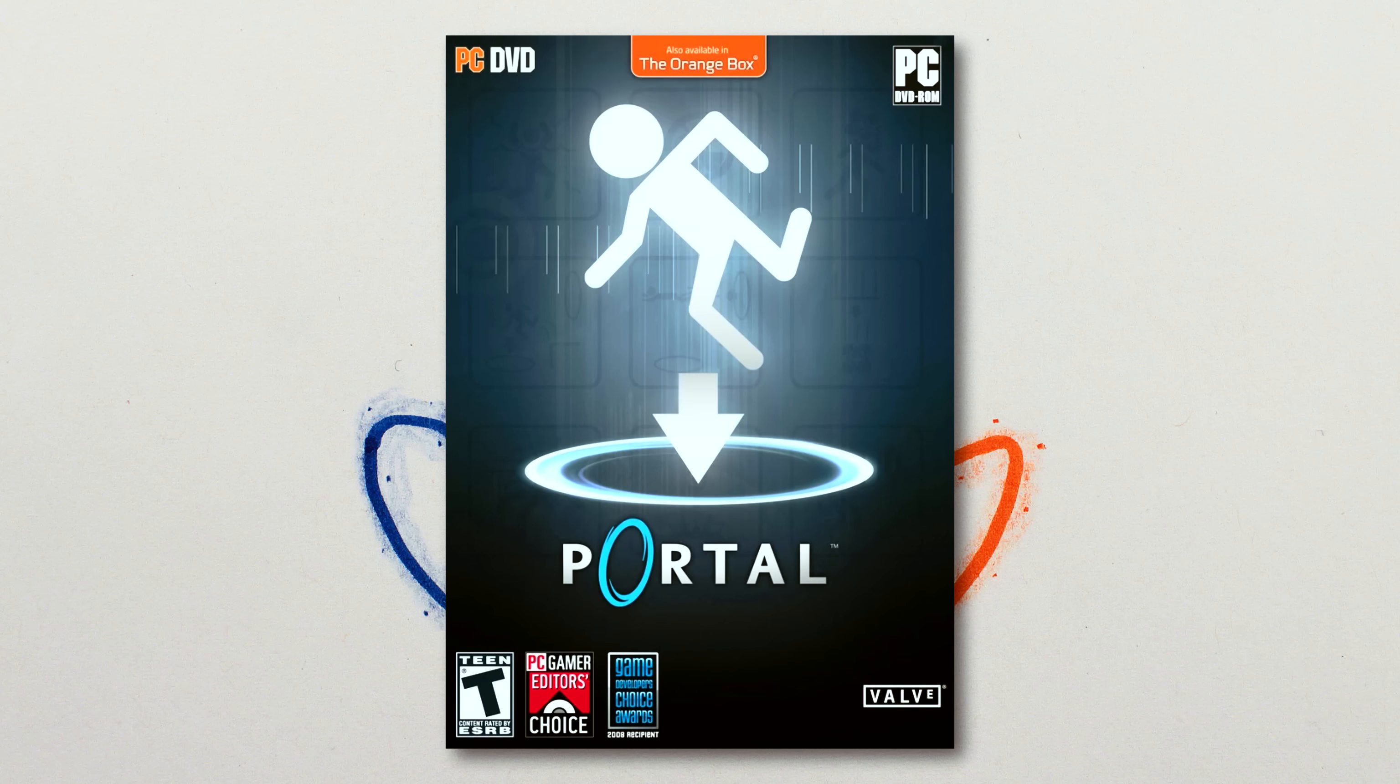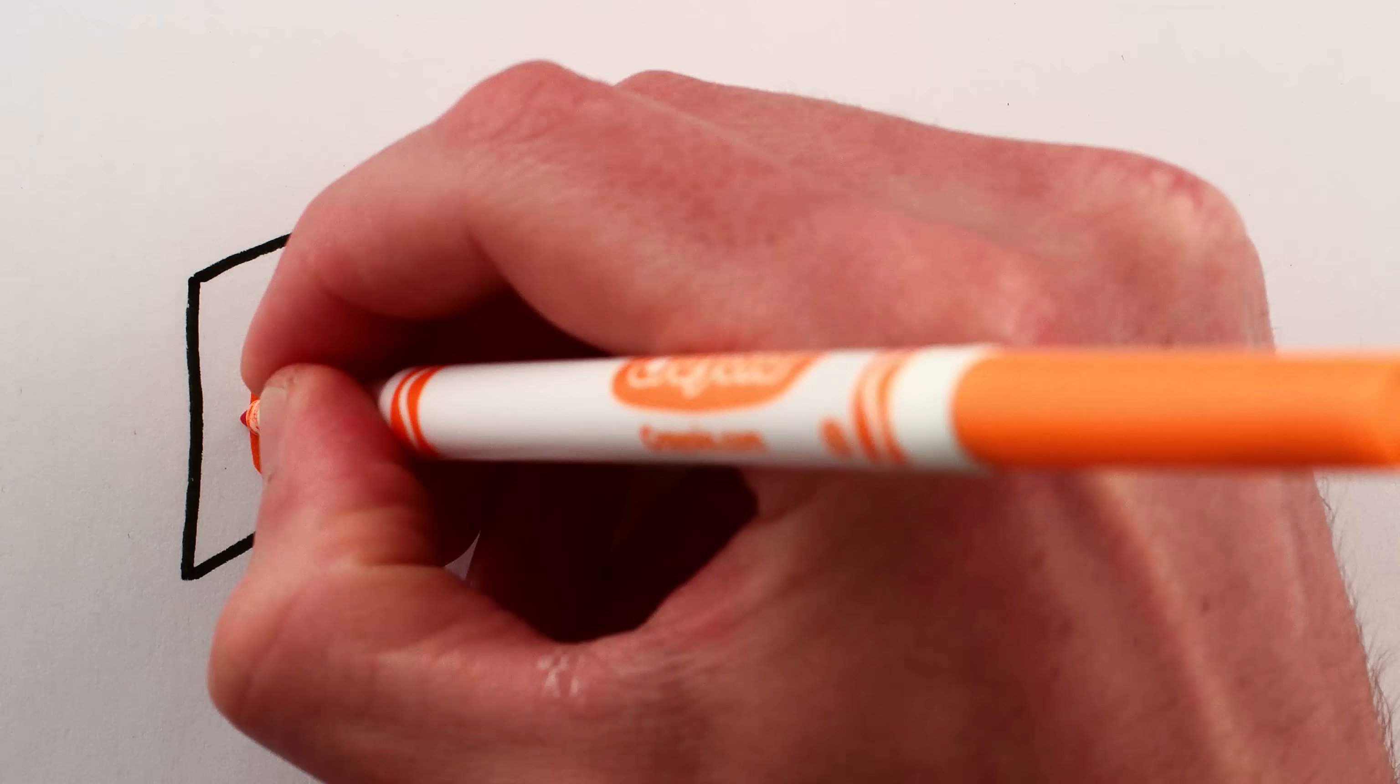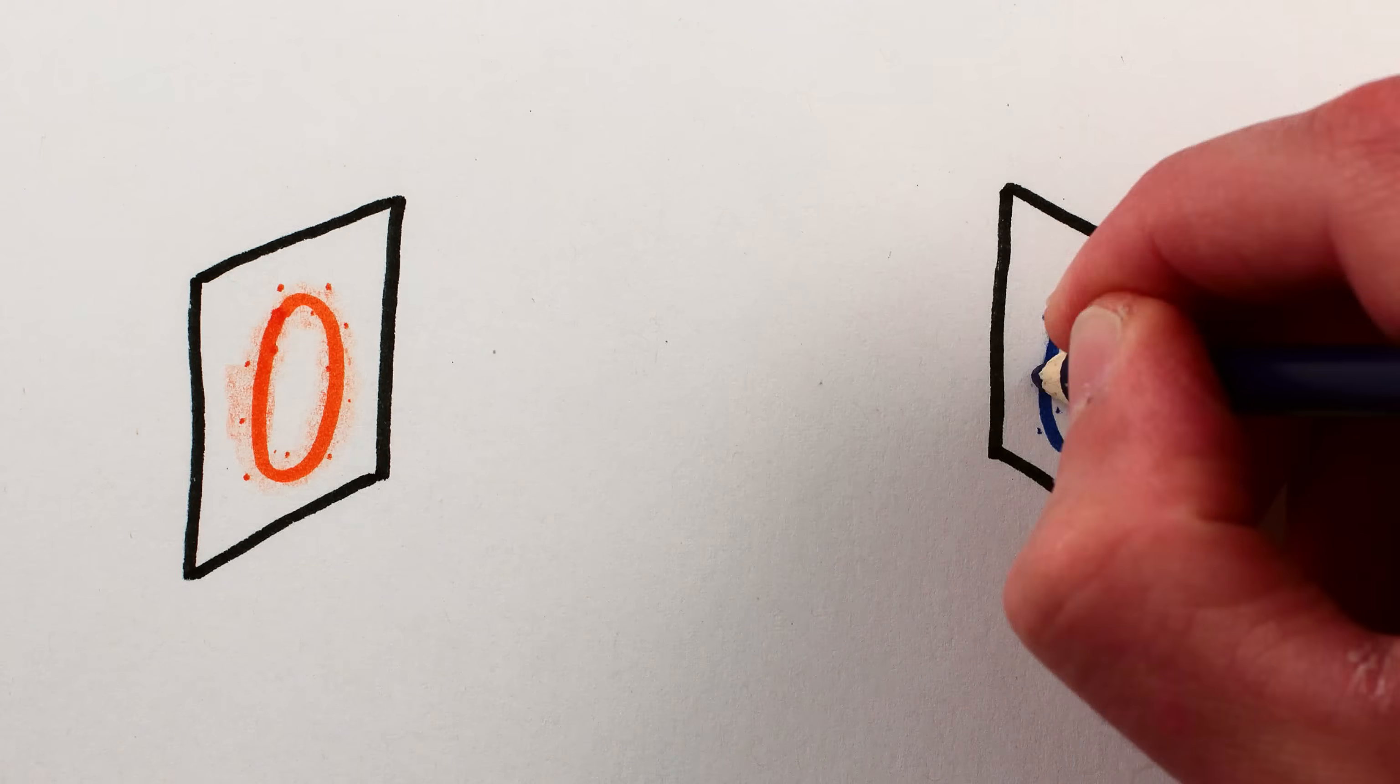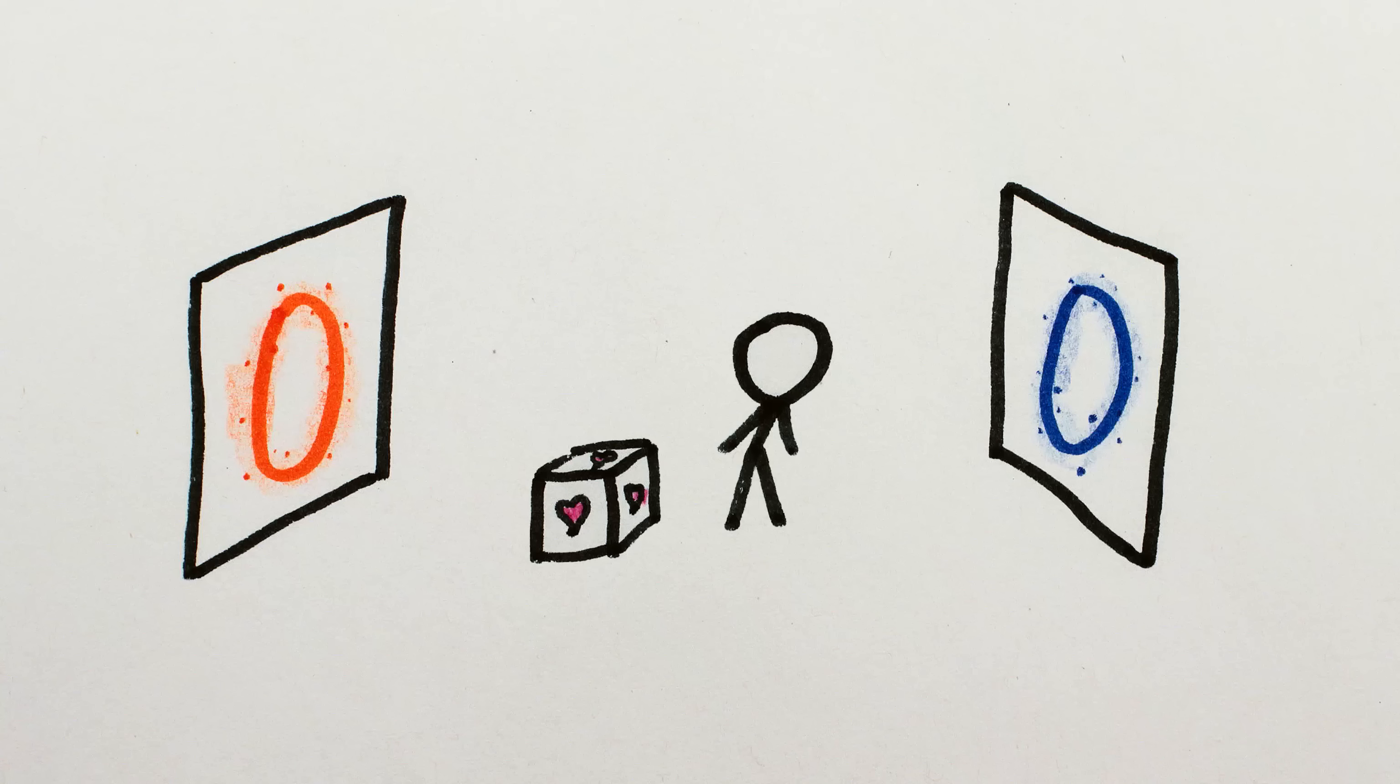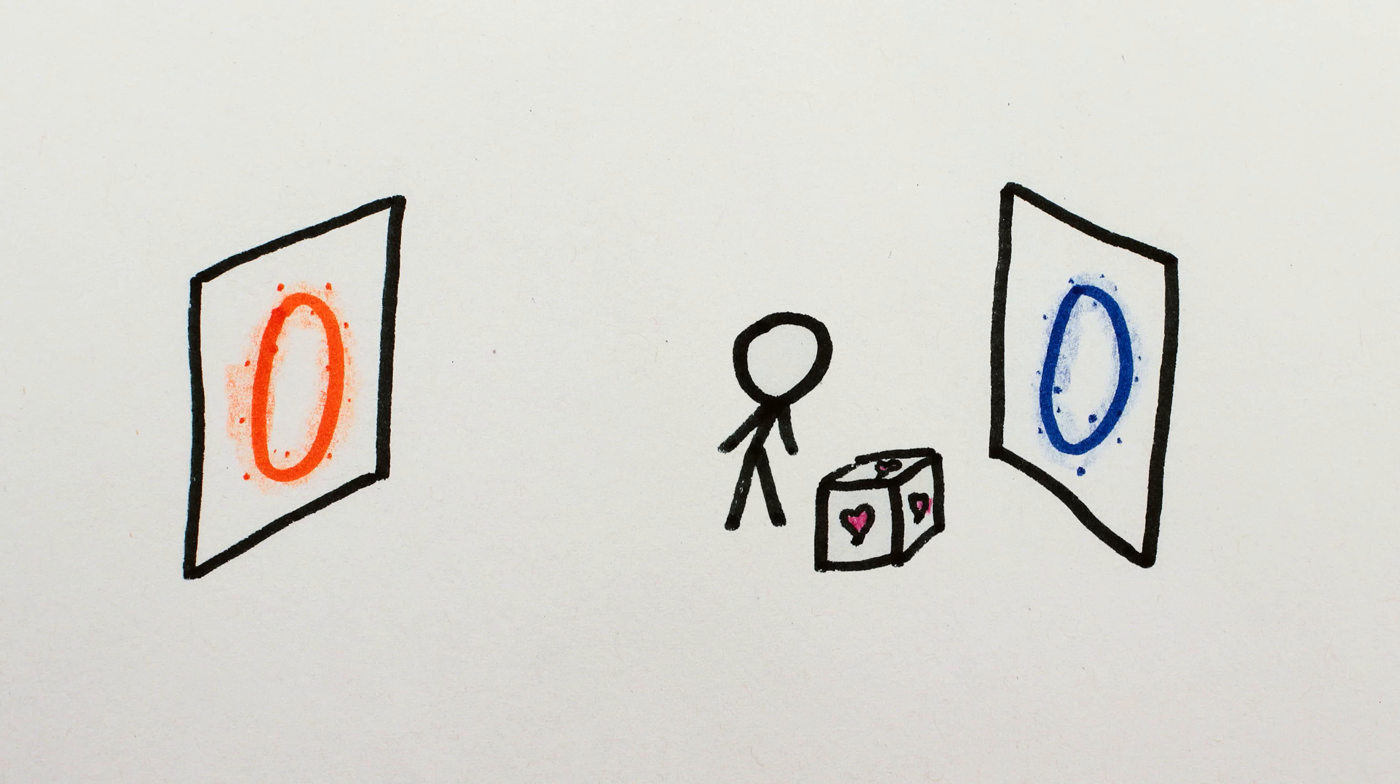The video game Portal is built around a sci-fi device that can create a portal connecting one place on the wall or ceiling or floor to another, and objects in the game, or the player themselves, can pass essentially instantaneously from one end of the portal to the other.